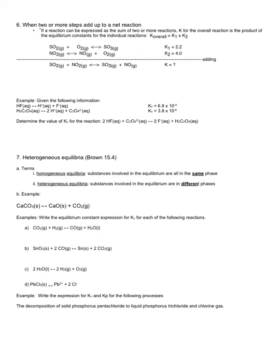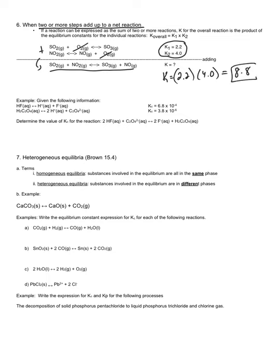Lastly with K: if two or more steps add up to an overall net reaction, what is the K value for that overall reaction? Here, if I add two reactions together, the oxygen cancels out and we get the overall equation. If I know the K value for each subsequent step that adds to an overall equation, the new K value is simply the product of those K values. With enthalpy we would add the values; here, we multiply.